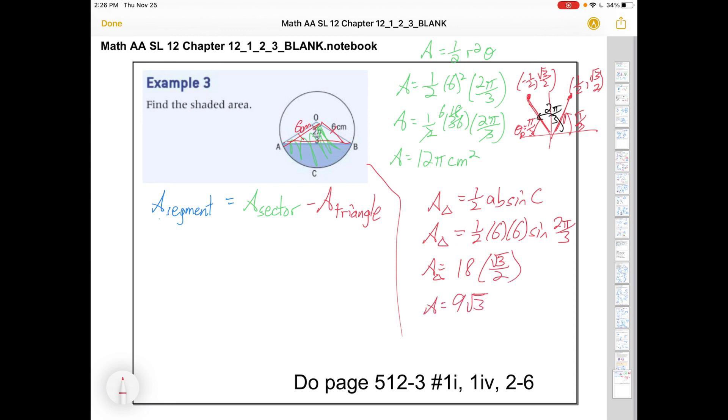So the area of the triangle is 9 root 3. Now if this is paper 2 you can just go straight to a decimal approximation. If it's paper 1, then we've got to keep it exact, or if we just want to feel smug and superior. Area of the sector is 12 pi minus 9 root 3.